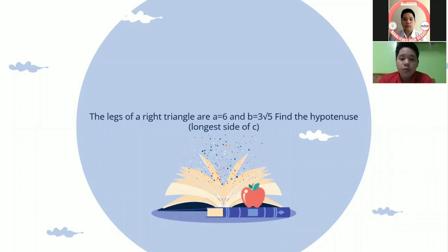Today I will teach you how to solve the problem. The legs of a right triangle are a equals 6 cm and b equals 3 square root of 5. Find the hypotenuse, also called the longest side.